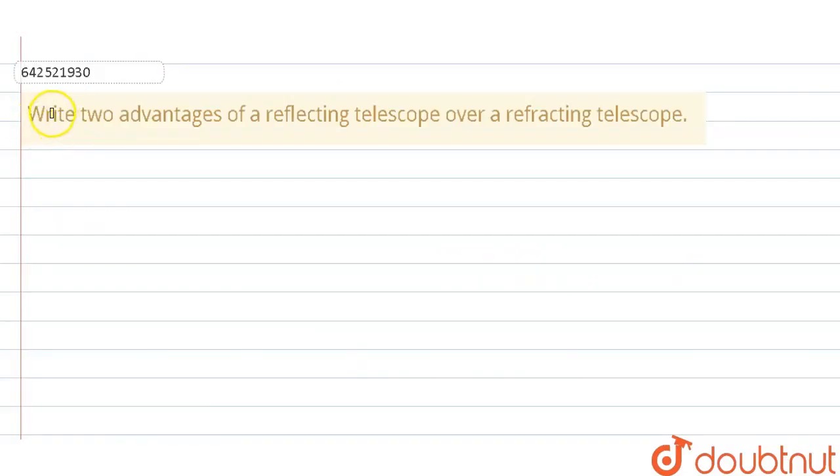Hello everyone, let's start with the question. The question says write two advantages of a reflecting telescope over a refracting telescope.